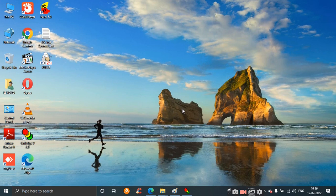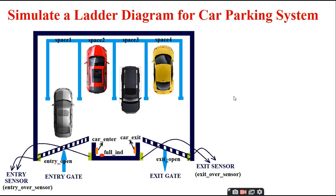Hello everyone. In this video we will discuss ladder diagram design for a car parking system. The car parking system has four spaces - space one, two, three, and four - and it has an entry gate and exit gate, along with a few sensors. Once any one of the car spaces is available, a car can enter the parking area and park there, and any car can exit from the exit gate.